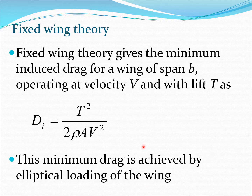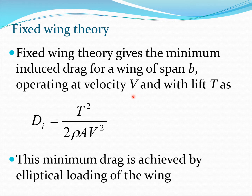Let us think about fixed wing theory. When the helicopter is in relatively high speed flight, the rotor can be thought of as a wing flying through the air. Fixed wing theory gives us the minimum induced drag for a wing of span b flying at velocity V with a lift T: D_i = T² / (2ρAV²). This minimum drag formula is obtained by presuming an elliptical loading on the wing.